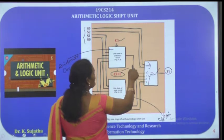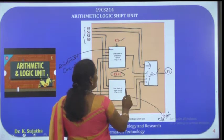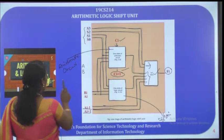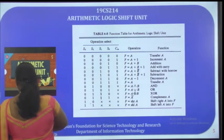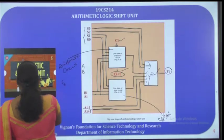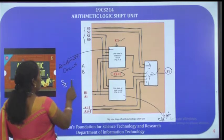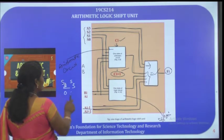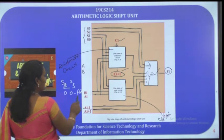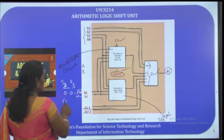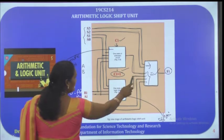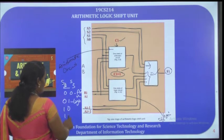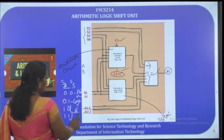The output of the arithmetic circuit is connected to multiplexer input 0, and the output of the logic circuit is connected to input 1. If selection inputs S2 and S3 are both 0, 0, the arithmetic circuit output is active. If they are 0, 1, the logic circuit output is active. If they are 1, 0 or 1, 1, the shift circuit is active.